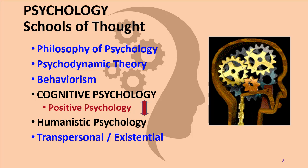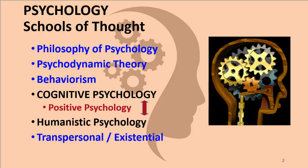As a brief review, psychology originally came from philosophy. Then we have the five major schools of thought: psychodynamic, behavioristic, cognitive, humanistic, and transpersonal or existential. This particular VoiceOver is focusing on cognitive psychology, but keep in mind that positive psychology rides between cognitive and humanistic psychology. It was Martin Seligman's concept to build a bridge between cognitive and humanistic psychology.